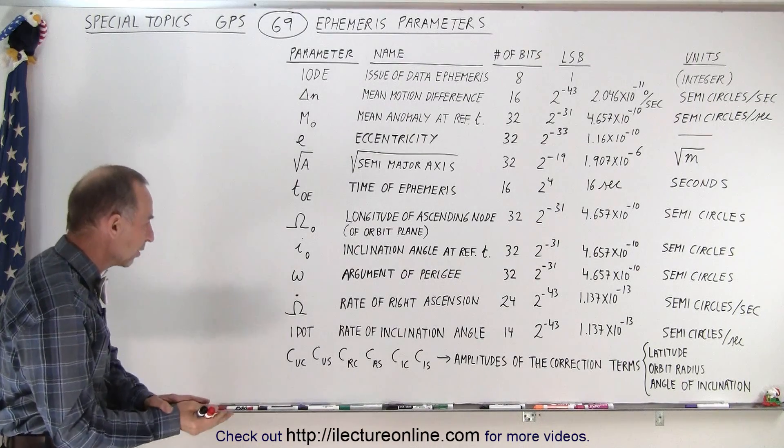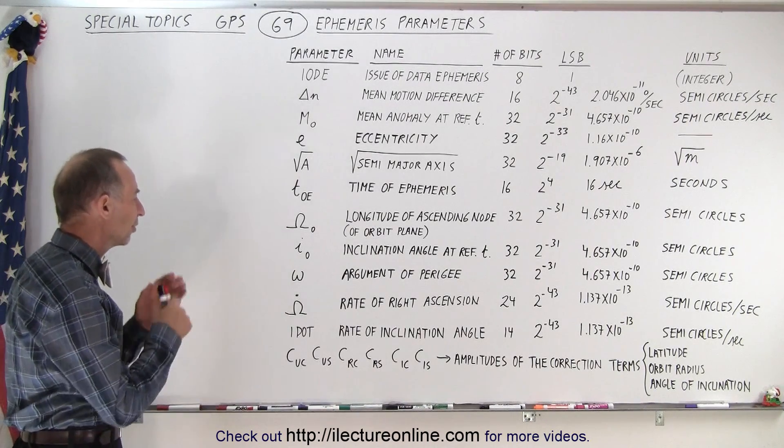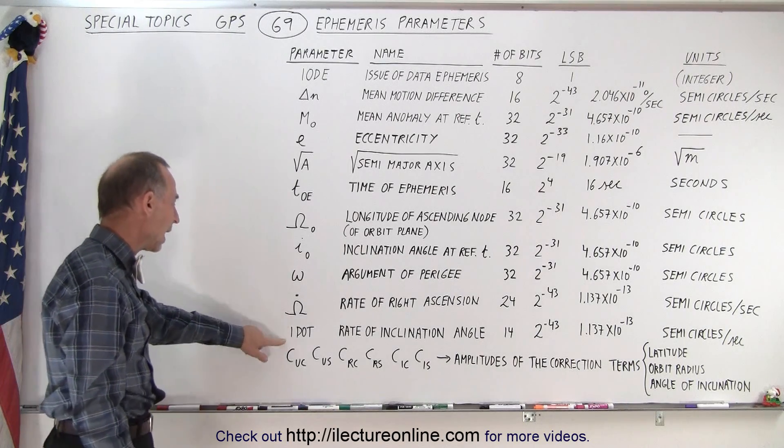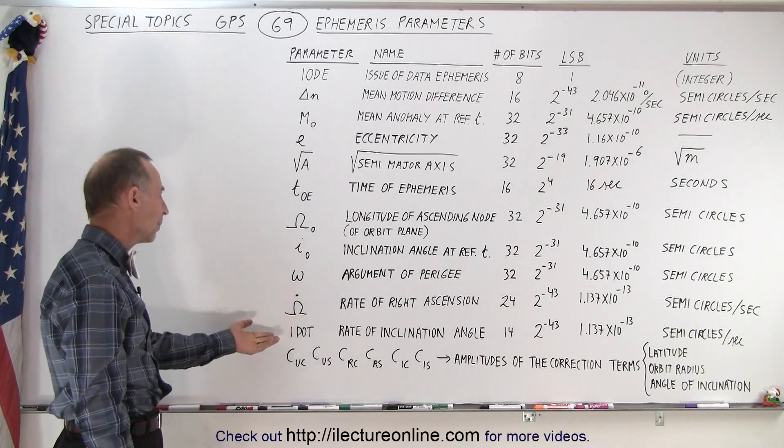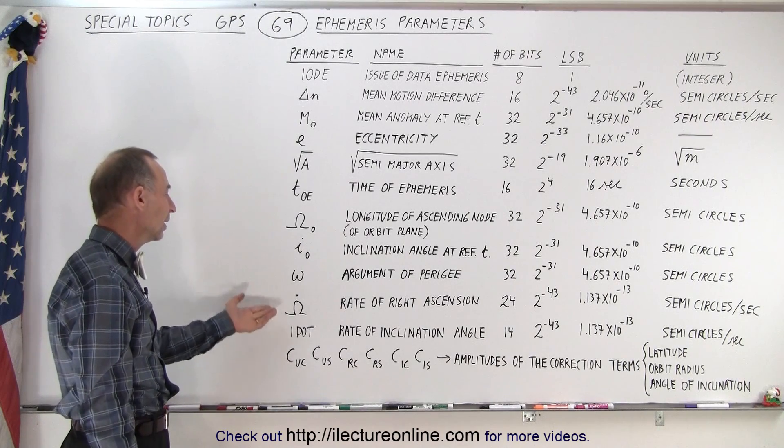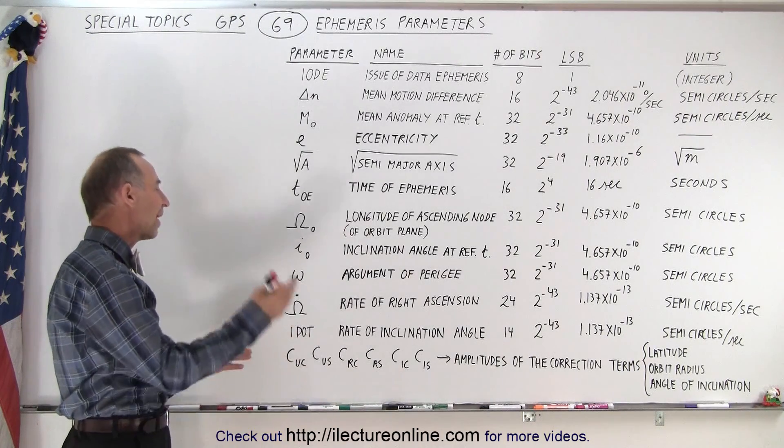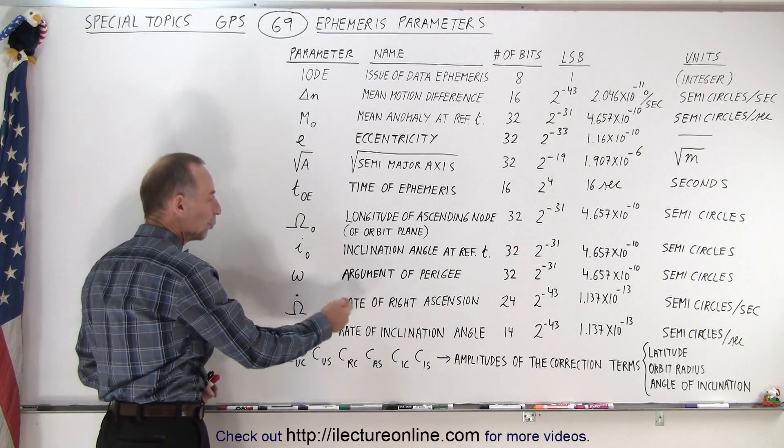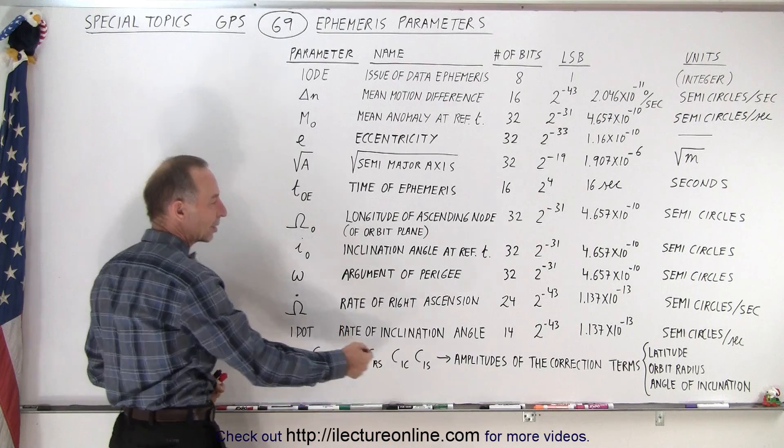Here we have I dot, which is simply I with a dot over it. I represents the rate of inclination angle. I'm sorry, I is the inclination angle and I dot is the rate of change of the inclination angle.